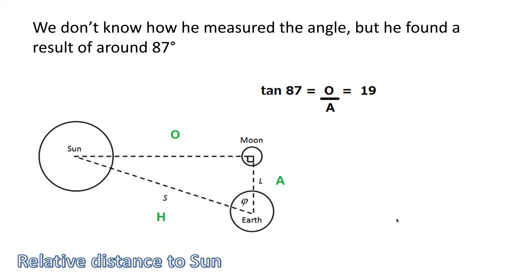That works out then, if we do some trigonometry here, we've got tan of 87 is equal to the opposite over the adjacent, and we get a value of 19.